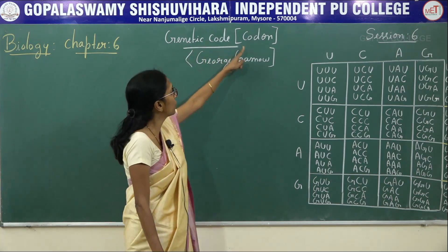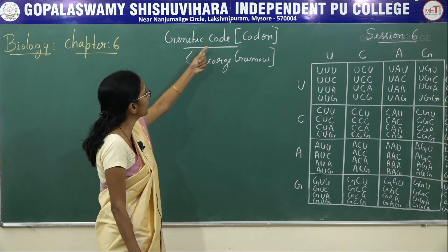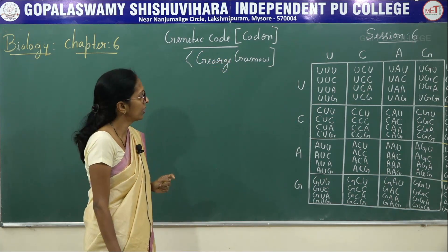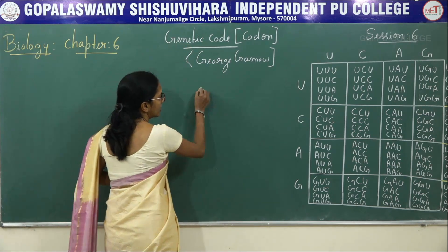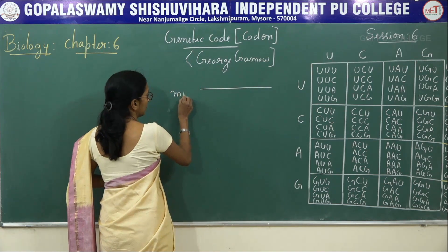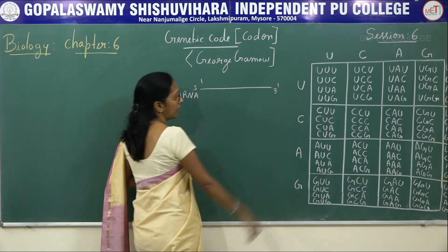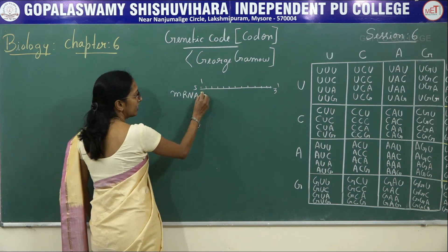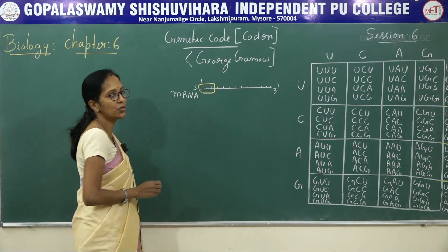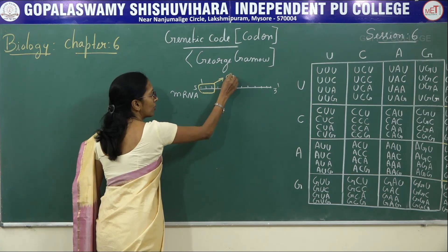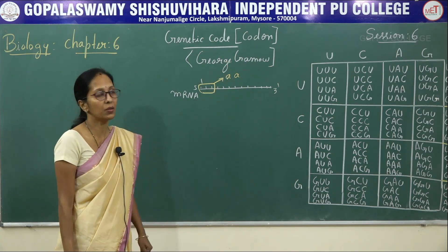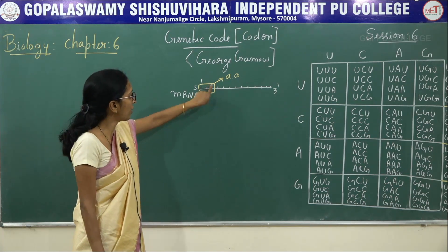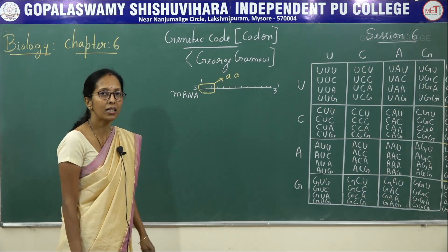Today we will discuss genetic code, also known as codon. The name was given by George Gamow in 1958. Genetic code means: a group of three nitrogen bases that is found on mRNA that codes for a particular amino acid. That is said to be the genetic code or codon.